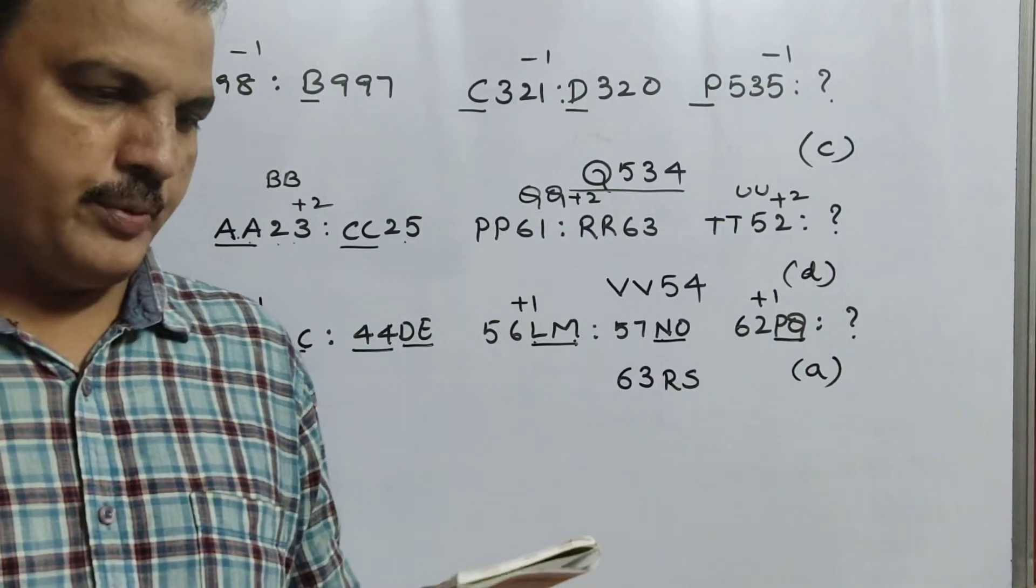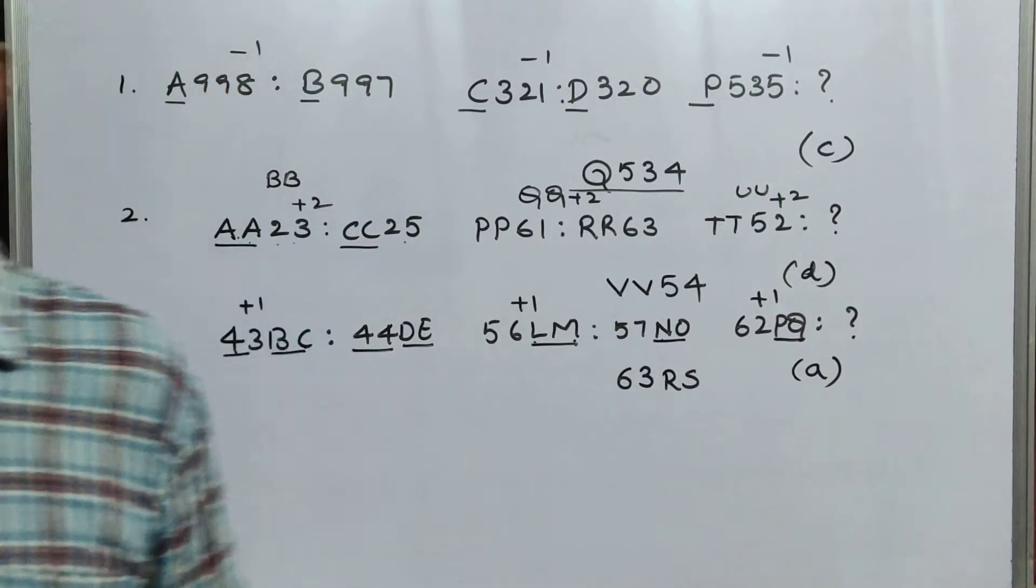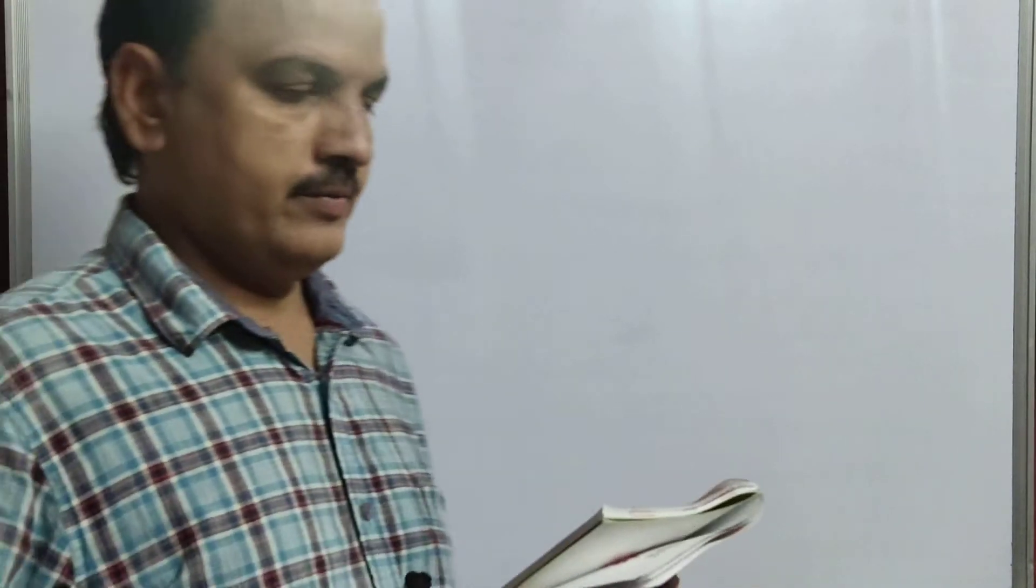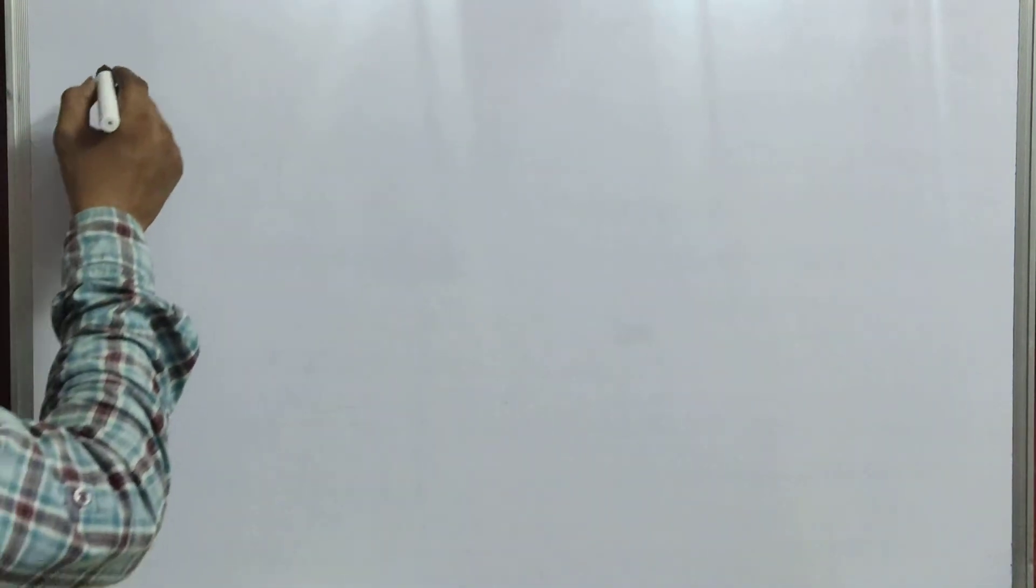Now, we will go for next page. That is, page number 7. The next page is page number 7, children. See here, analogy. That is, here, a pair of quotes is given. That means, according to the quotes is given, tick the pair which shows the similar relationship that shown by the given pair.